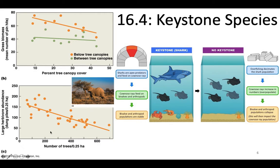The elephants function as keystone species by influencing grass and also the other large herbivores that feed on the grass. Another typical keystone species example is sharks. The word 'keystone' comes from the architectural keystone — the piece that holds together the structural integrity of an arch. Sharks are apex predators that feed on cow nose rays. The cow nose rays feed on krill, crabs, clams, and other organisms, and the bivalve and arthropod populations have stability through that interaction.